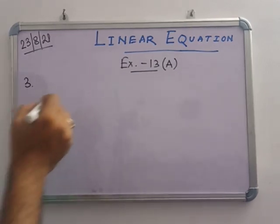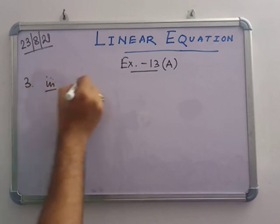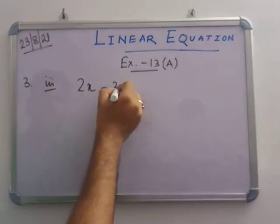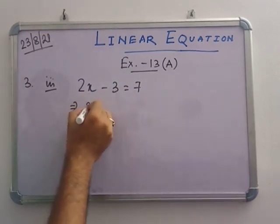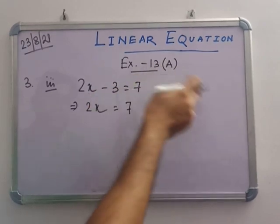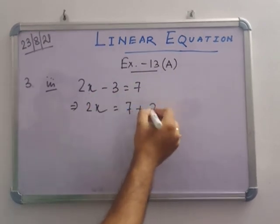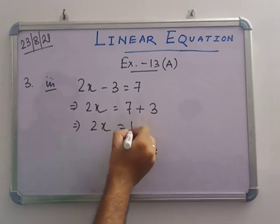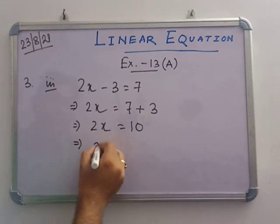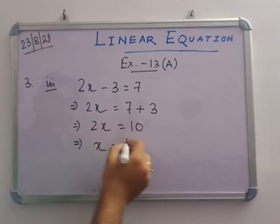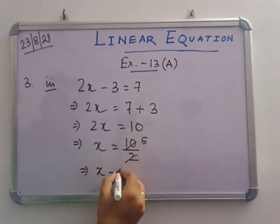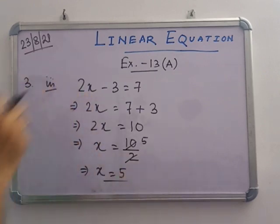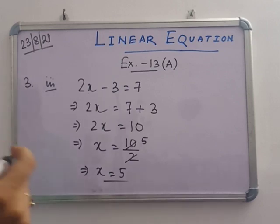In number 3: 2x minus 3 equals to 7. So 2x equals to 7 plus 3, which gives 2x equals to 10. Therefore x equals to 10 by 2, which is 5. Verification: 2 into 5 equals 10, and 10 minus 3 equals 7. This is clarified.